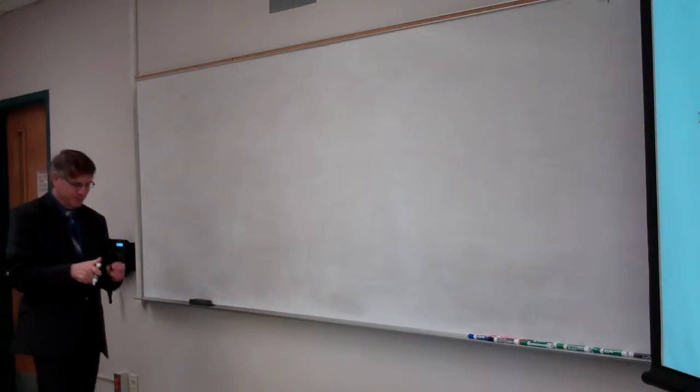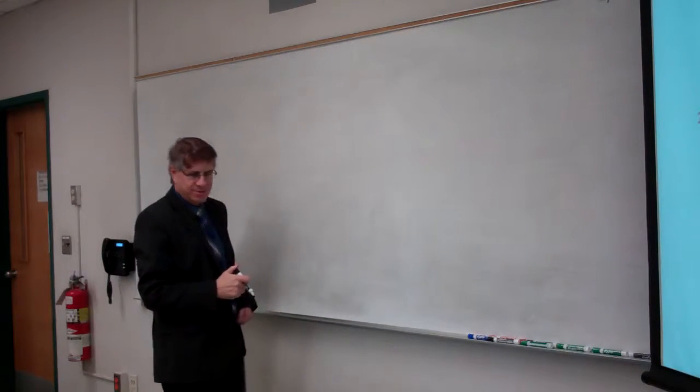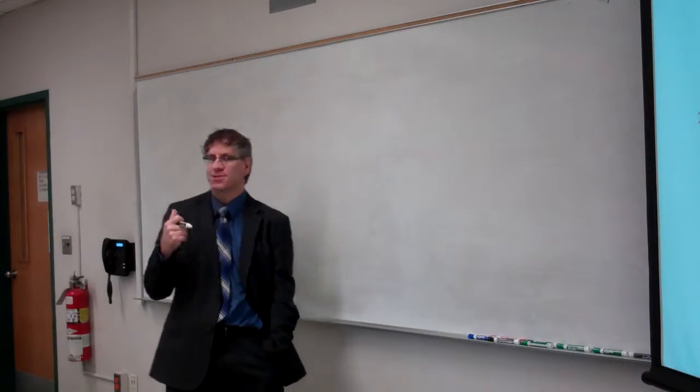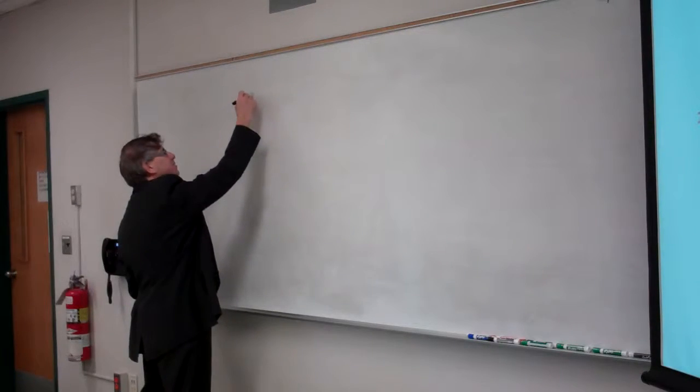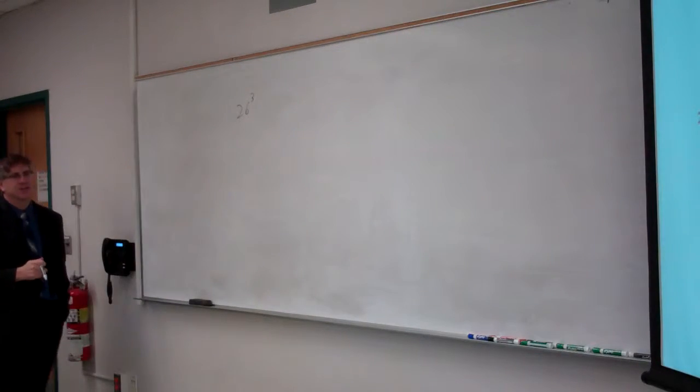Assuming initials are taken from uppercase letters, how many three-letter initials are possible? A through Z, 26 options for the first initial, 26 for the second, 26 for the third. That's a straight product rule.